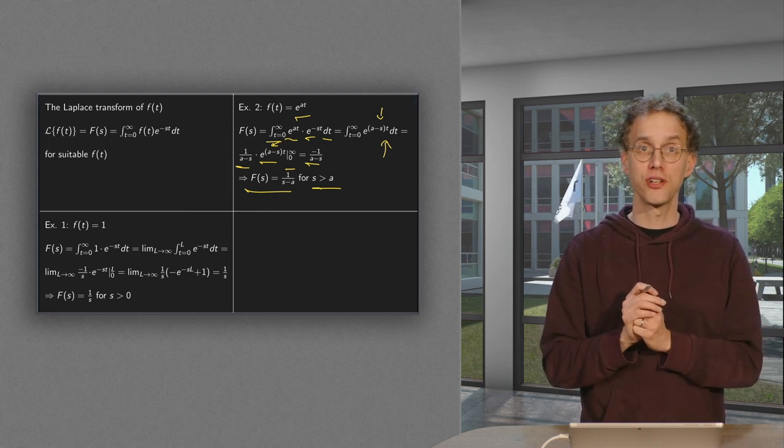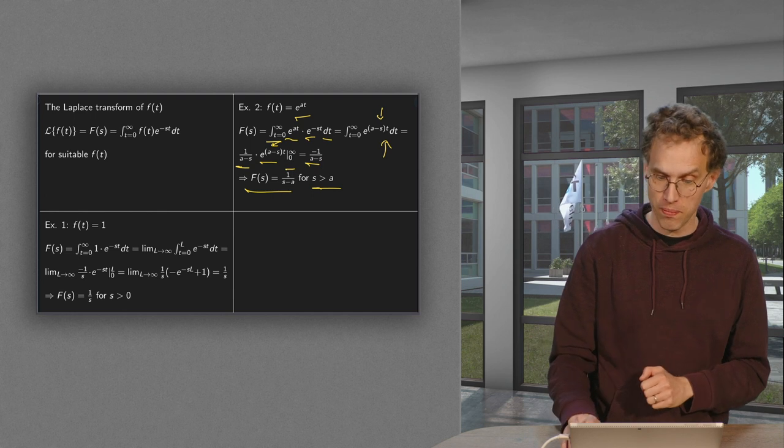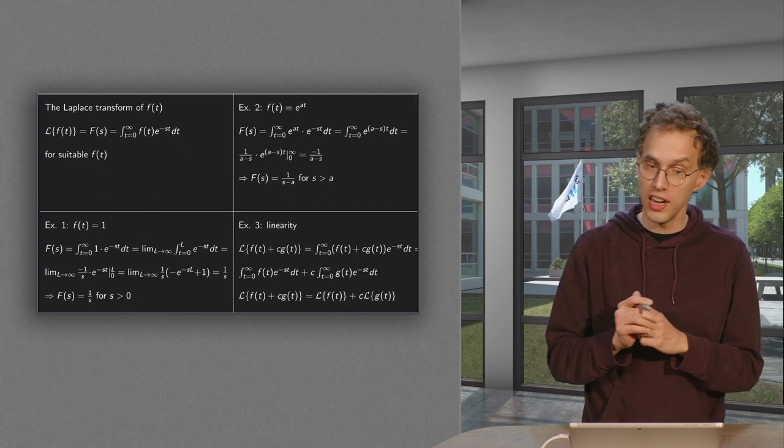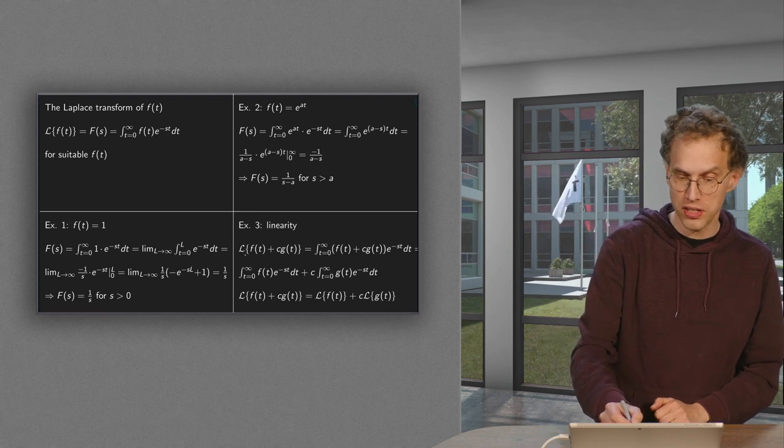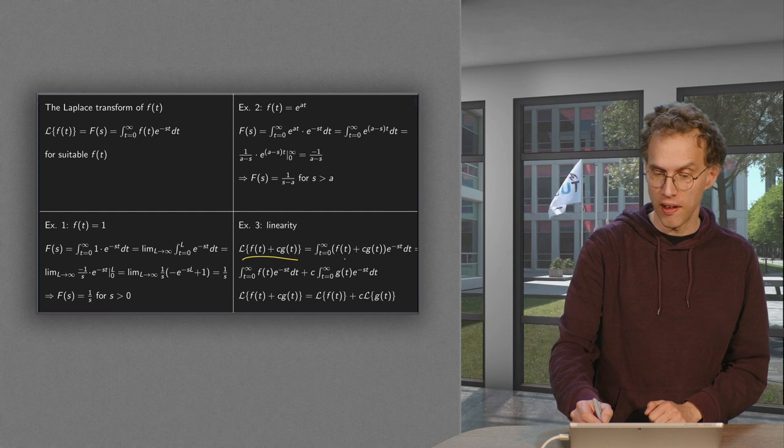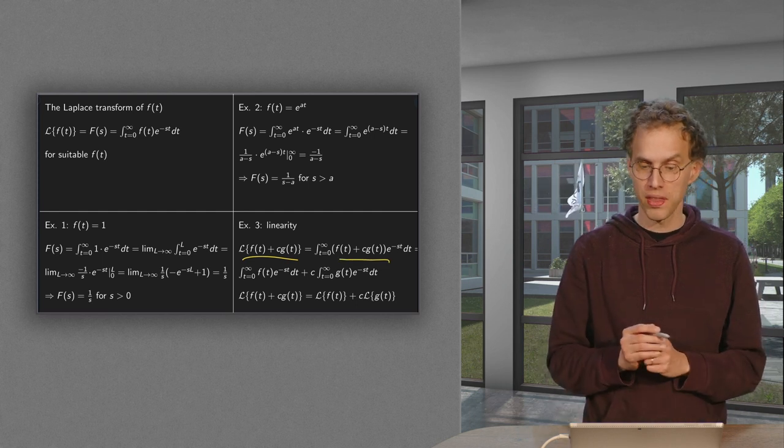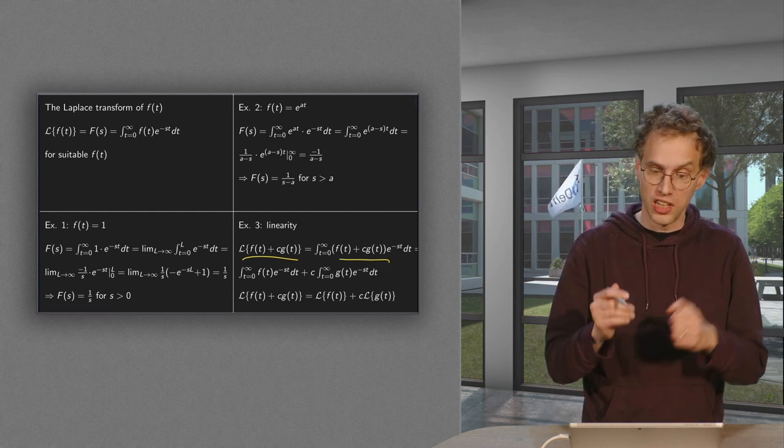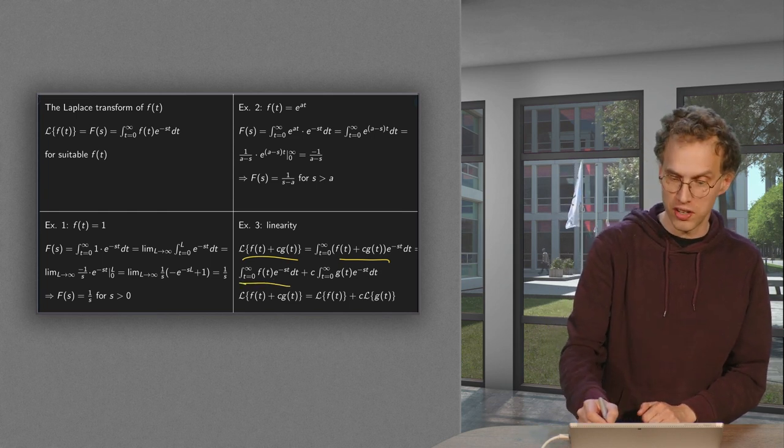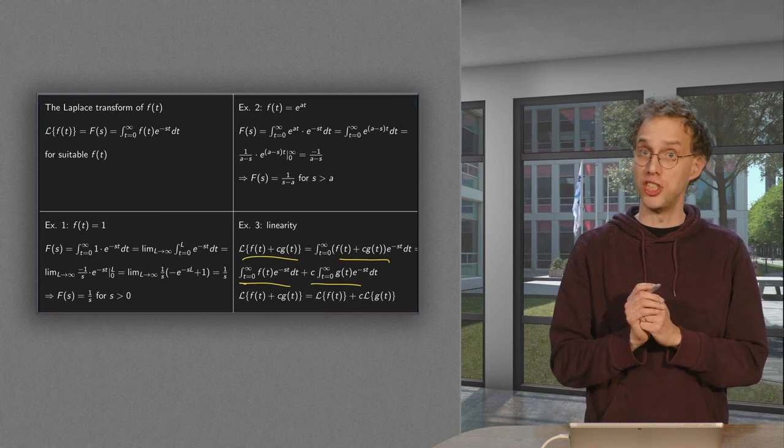So that is the Laplace transform of e to the power at. And then this linearity - that is really handy. If you have the Laplace transform of a linear combination of functions, then you have to integrate this linear combination. But integration is linear, so you can split them into two parts: the integration of f and c times the integration of g.